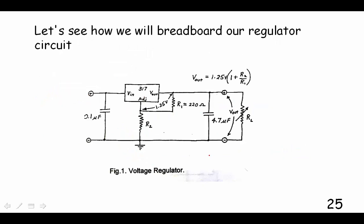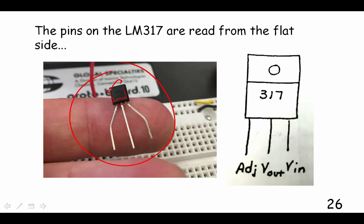Let's see how we would breadboard this circuit. Here's an LM317, and you see one side of it is flat. We always read from the flat end, and the pinouts are the adjust pin, the Vout pin, and the Vin pin.